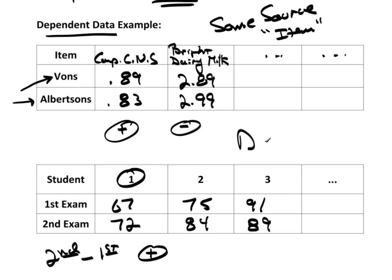So dependent because it's the same source. Student one, student two, student three, these measurements were taken from the same source.